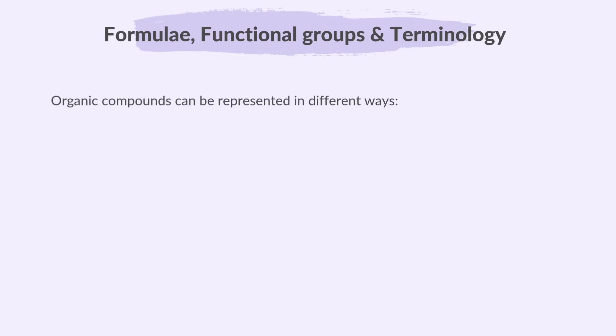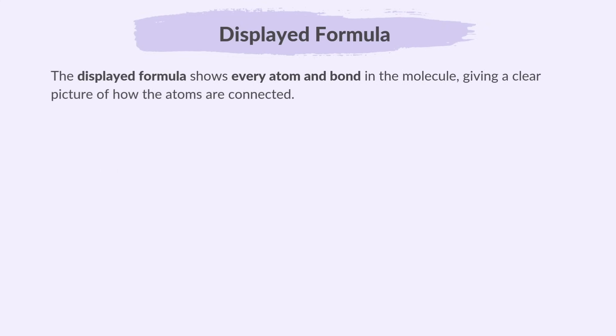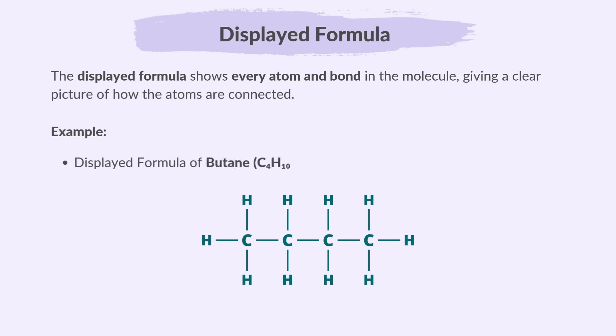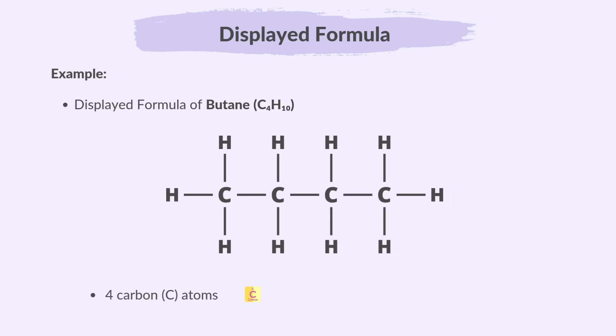Organic compounds can be represented in different ways: displayed formula, structural formula, and general formula. The displayed formula shows every atom and bond in the molecule, giving a clear picture of how the atoms are connected. Let's use the compound butane C4H10 as an example. Butane has 4 carbon atoms and 10 hydrogen atoms.